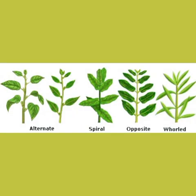The three types are alternate, opposite, and whorled. In alternate arrangement, one leaf arises from each node, and leaves are attached to the stem in a spiral pattern. Examples of plants with alternate leaves include sunflower, mango, and china rose.